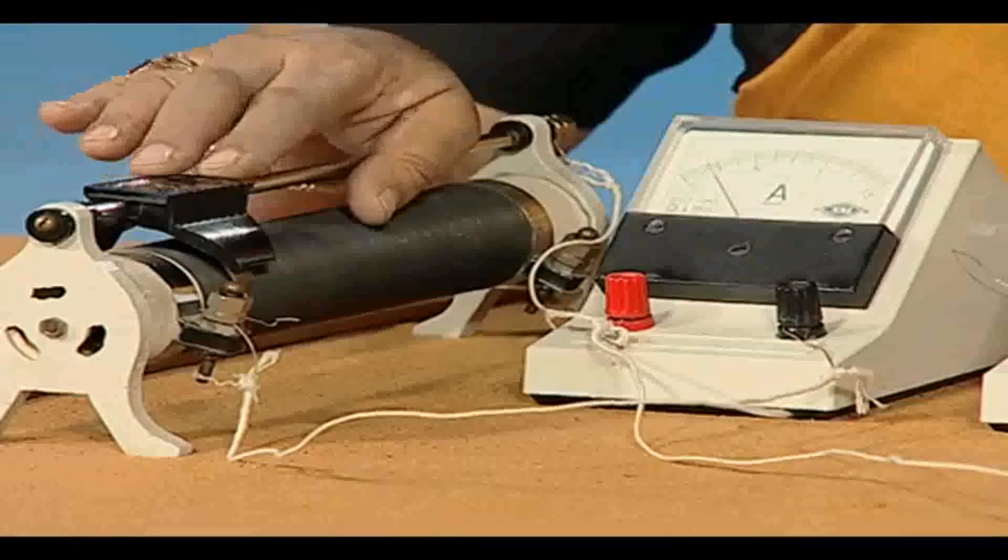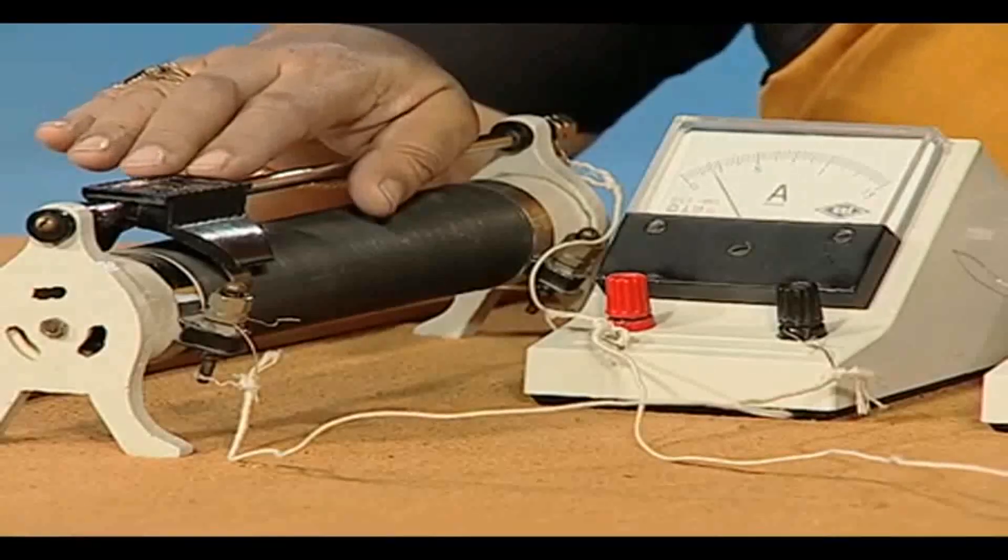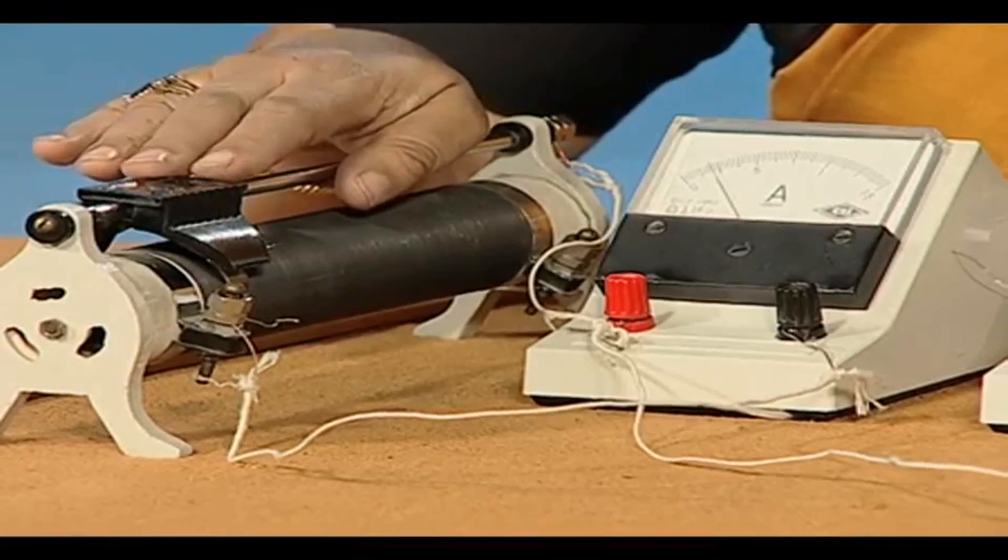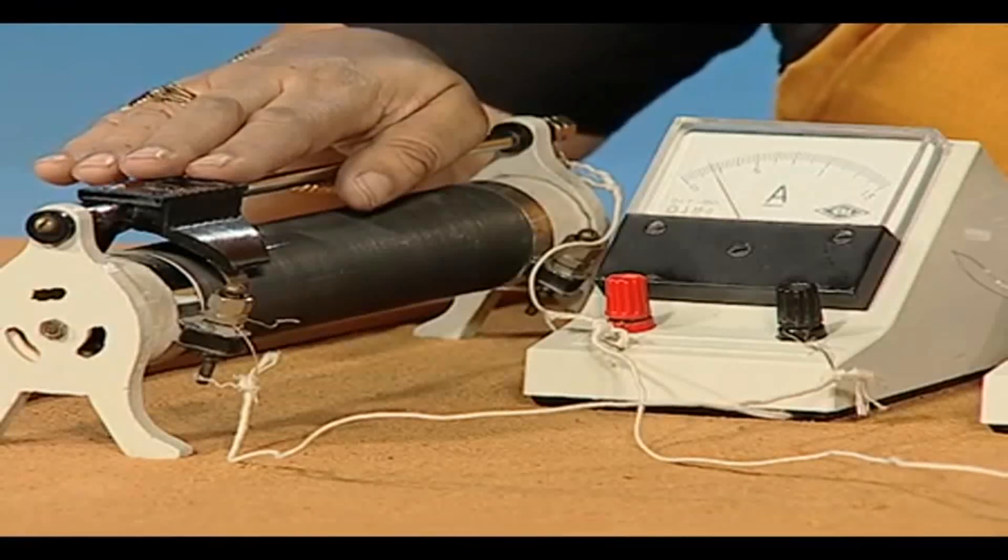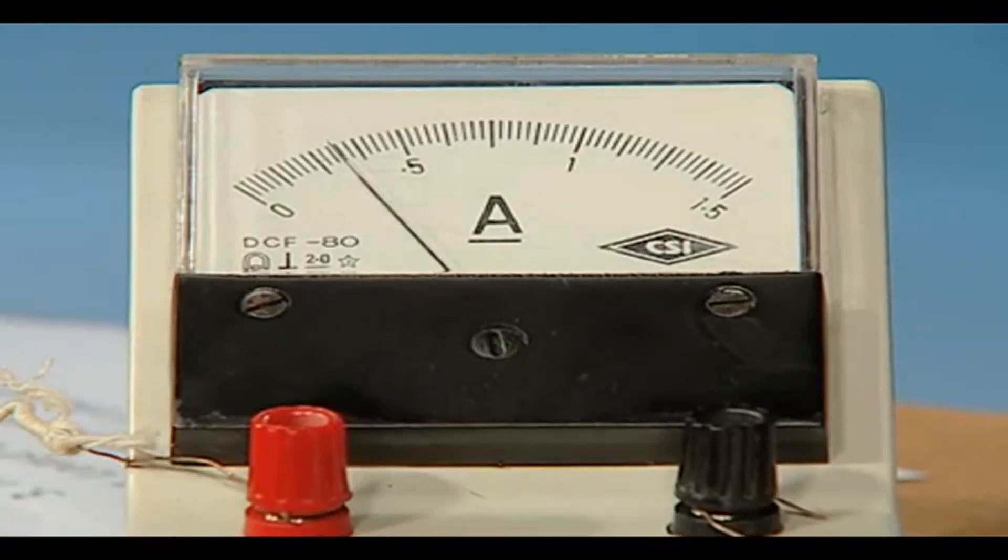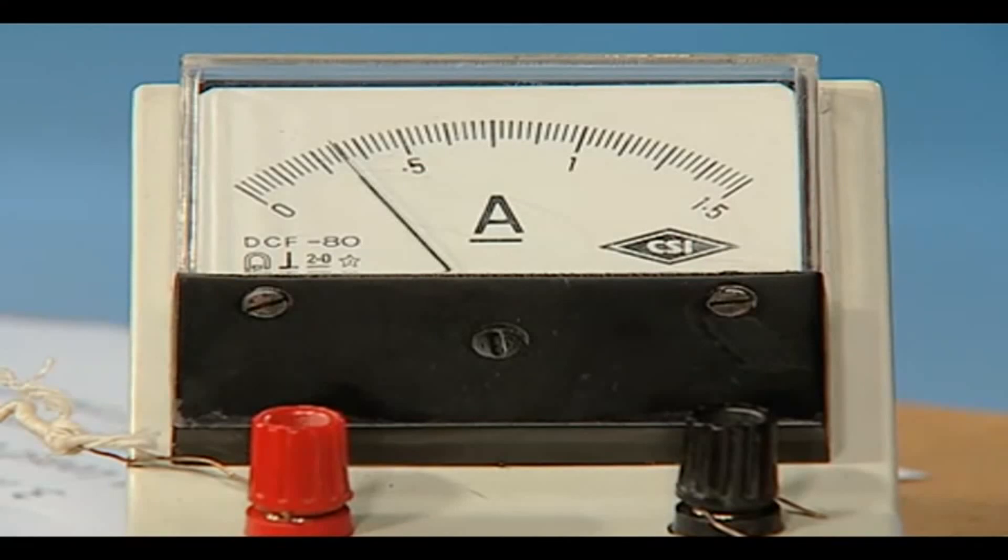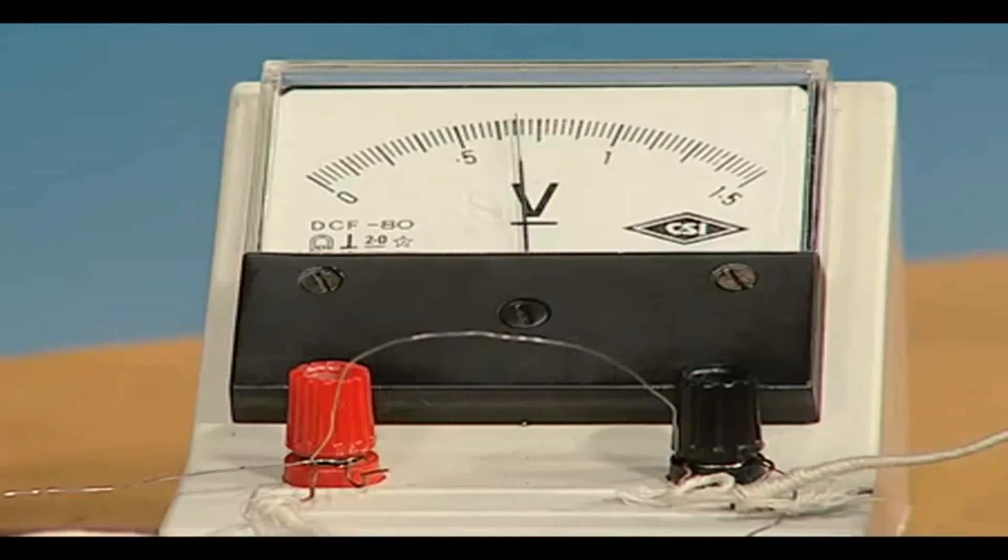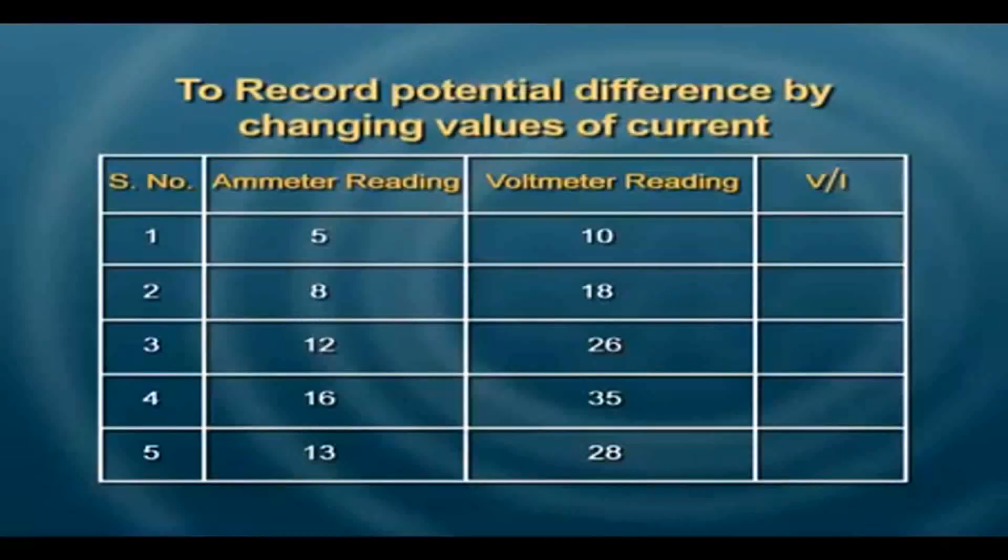One more reading we can take here. In this way we can take at least 5 readings. Minimum of 5 are required because we plan to plot a graph. So the ammeter reading this time is 13 divisions and the voltmeter reading is 28 divisions.